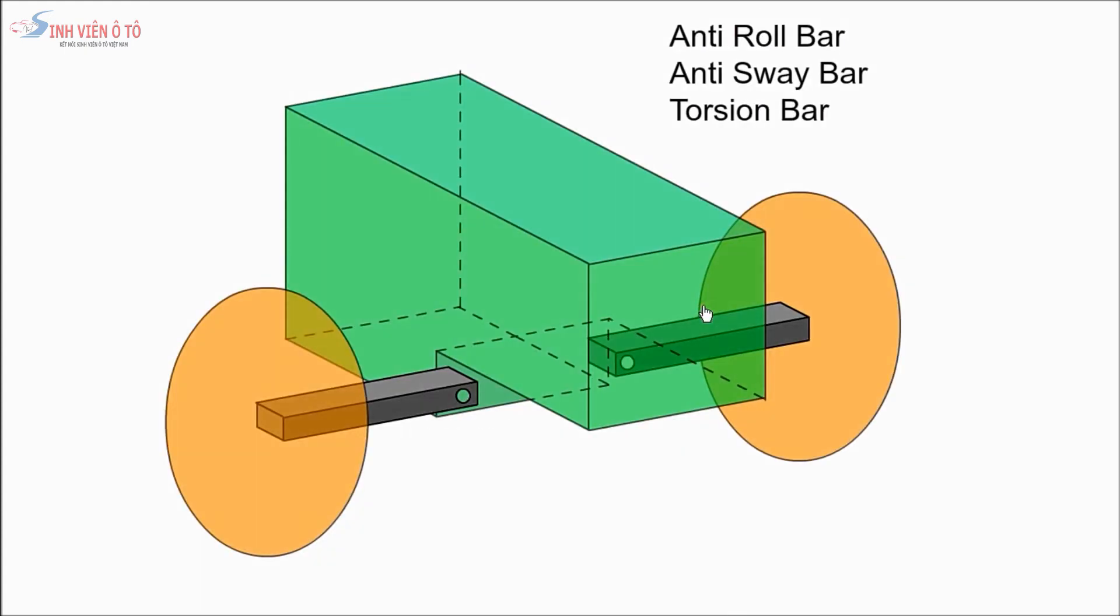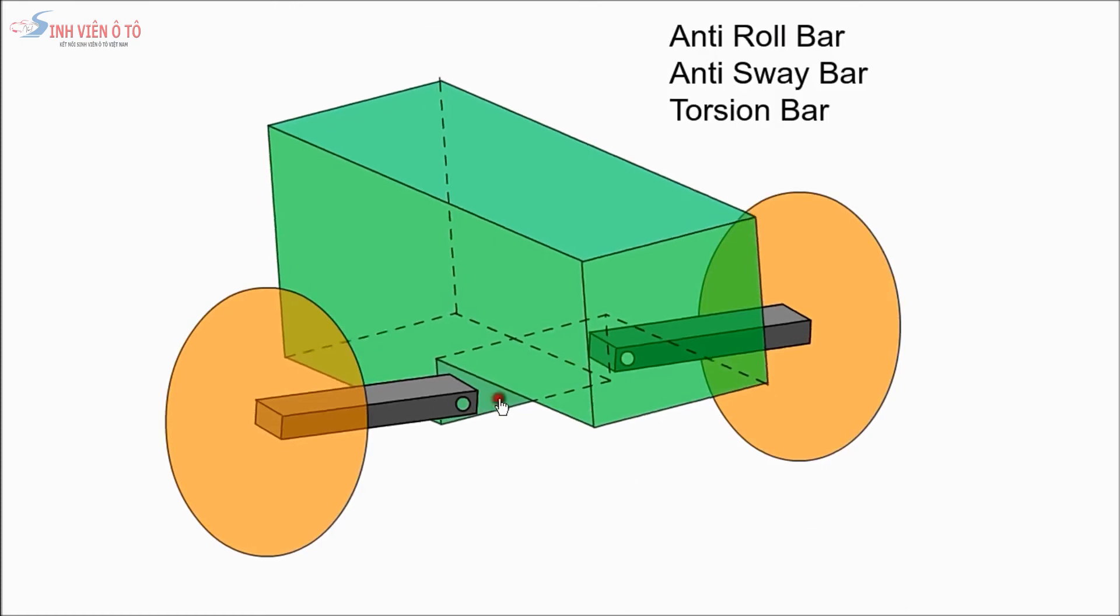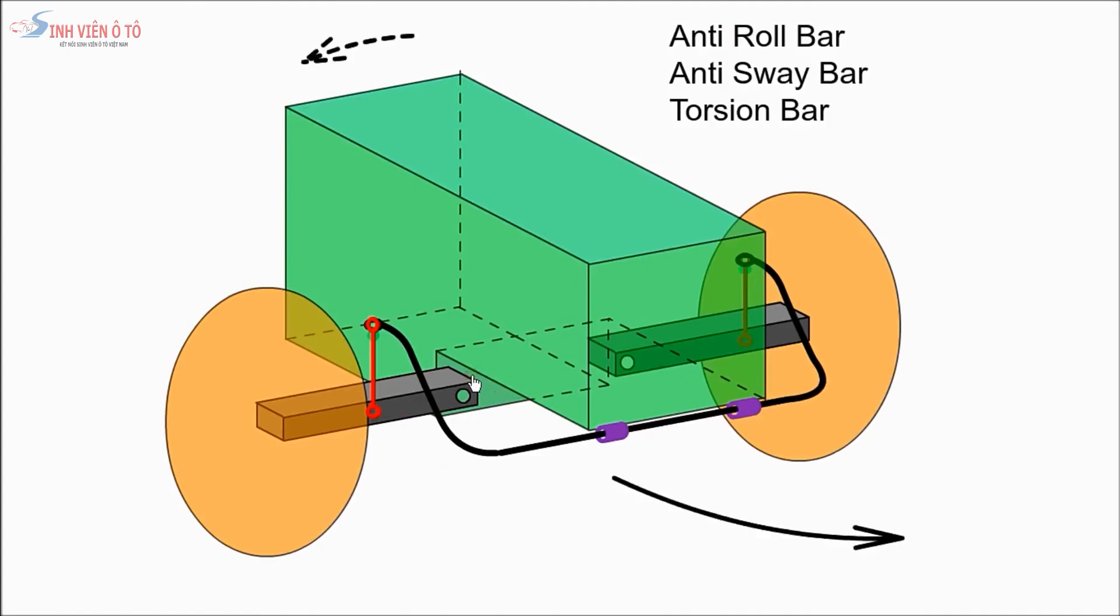When a car corners, the body tends to roll or sway. In this demo we have omitted the springs and dampers for clarity. An anti-roll bar, sway bar, or torsion bar connects left and right side suspension to each other. As the suspension is compressed on one side, it exerts a twisting force on the torsion bar, transferring some of the load to the other wheel, reducing body roll. Most cars have a front anti-roll bar, while sports cars may have one front and back.